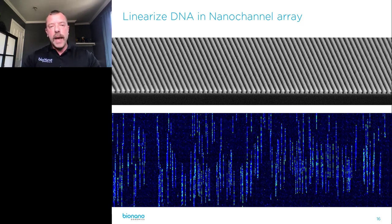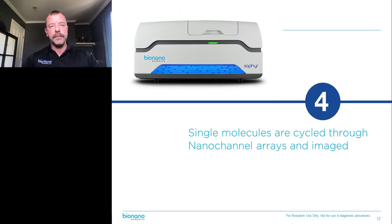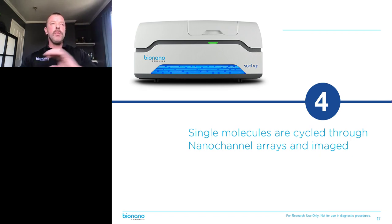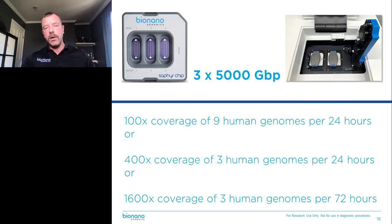We stain the background in blue with an intercalating dye, and then the green dots you see are the labels attached to that six base pair sequence motif. The instrument cycles molecules into the nanochannels, images them, pulls new molecules in, images them, and does that over and over again.